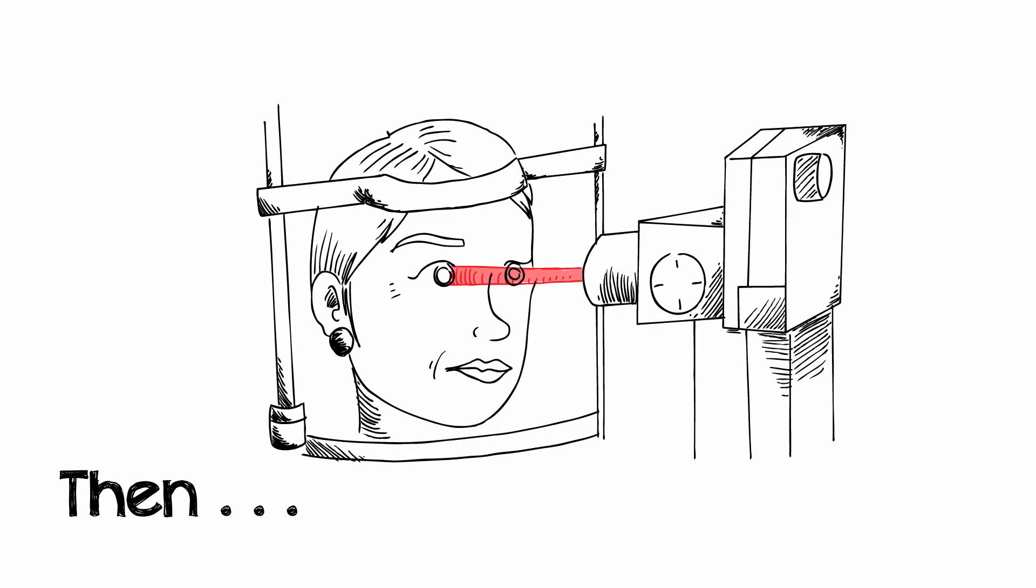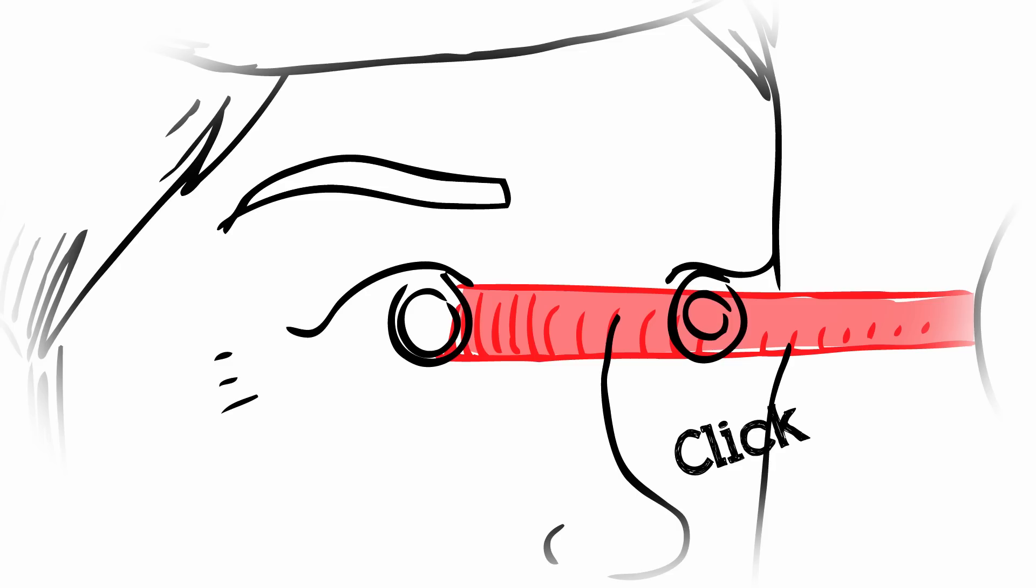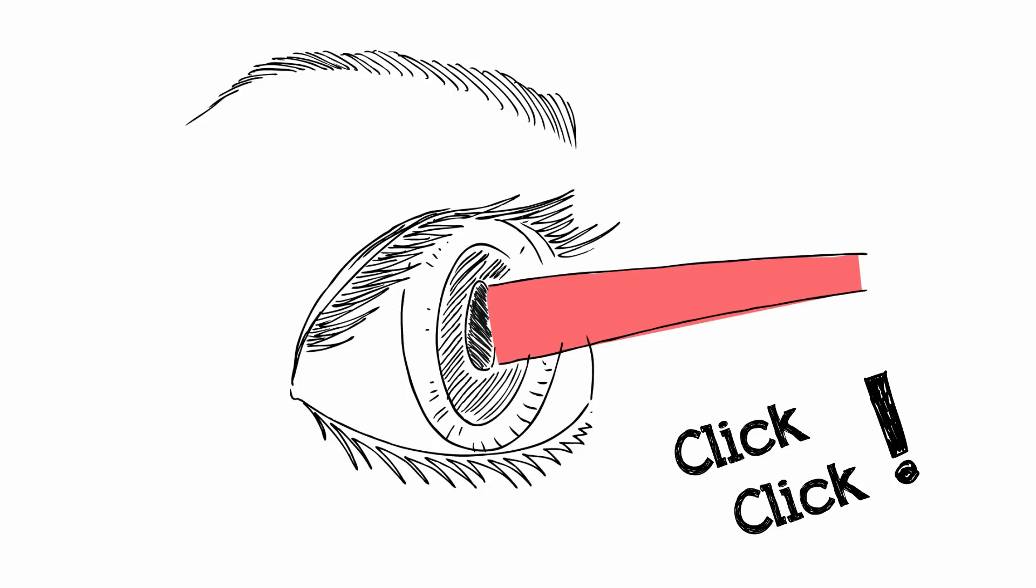Now you look at a fixation light with the other eye. Click, click and you're done. The laser makes a small opening in the scar tissue and voila, your vision improves.